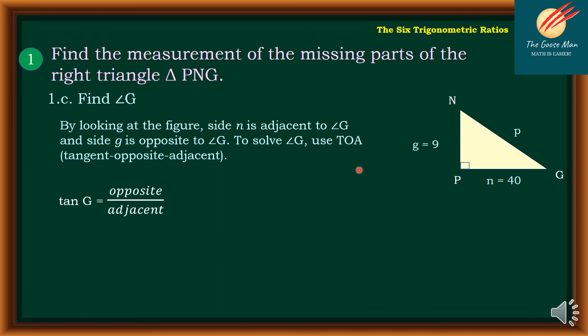So take note that tan G = opposite/adjacent. So that is the opposite g over n. Simplifying it further, tan G = 9/40 by simply substituting the value of g and n respectively.